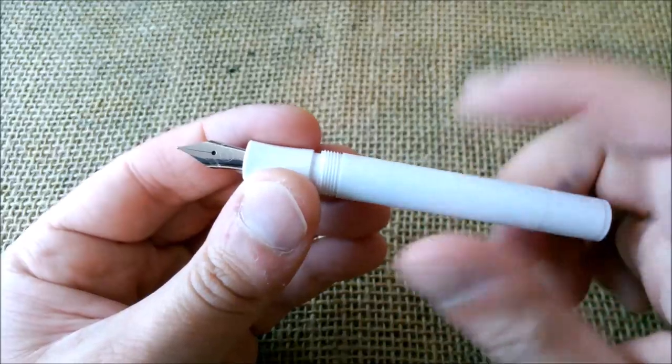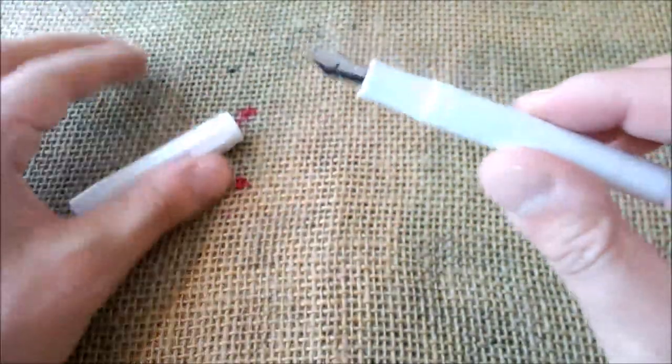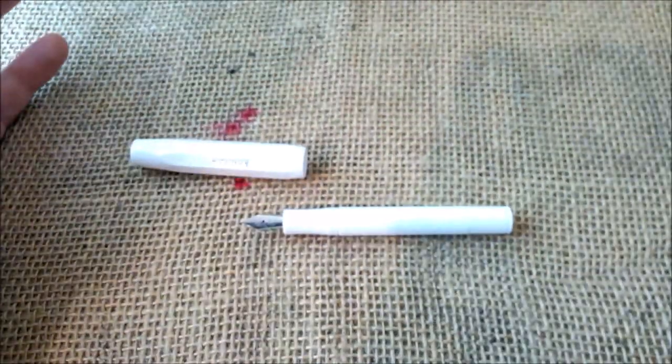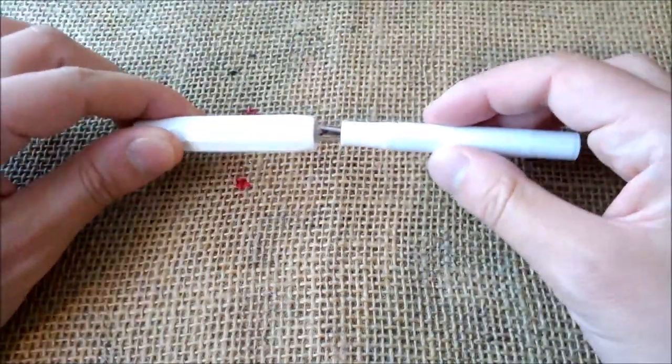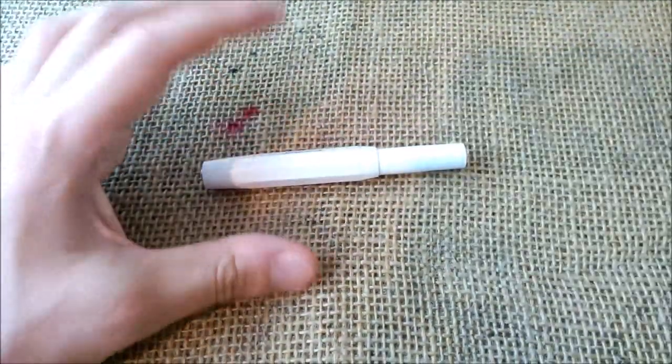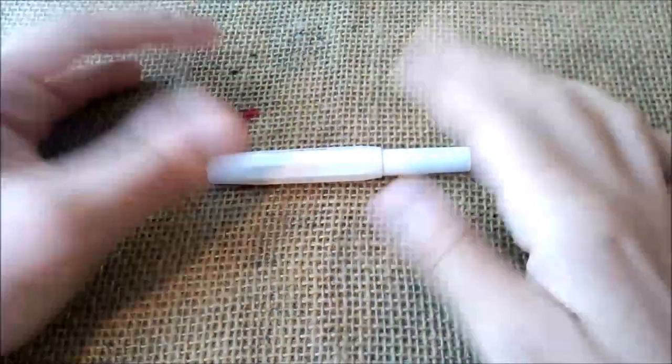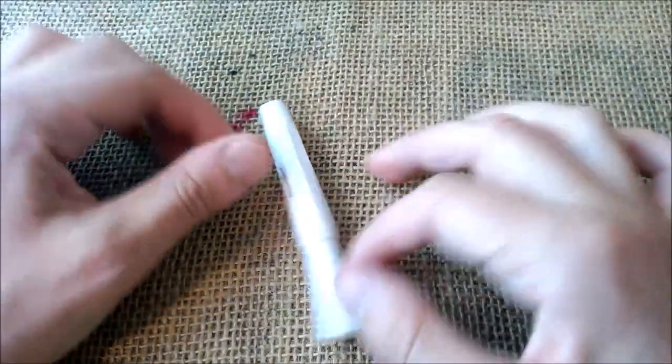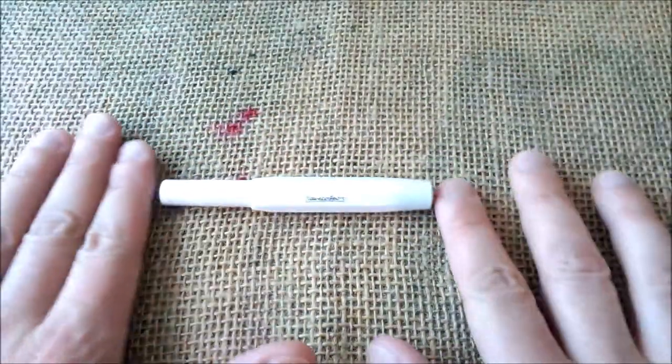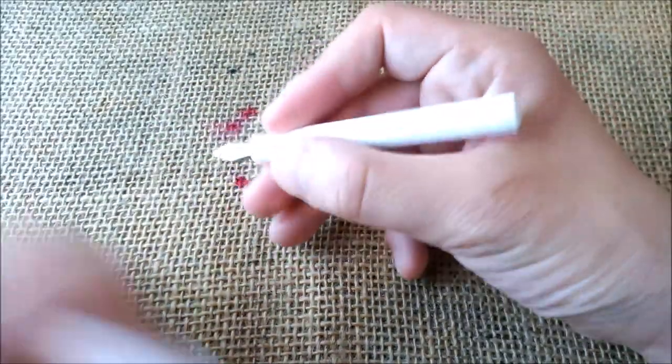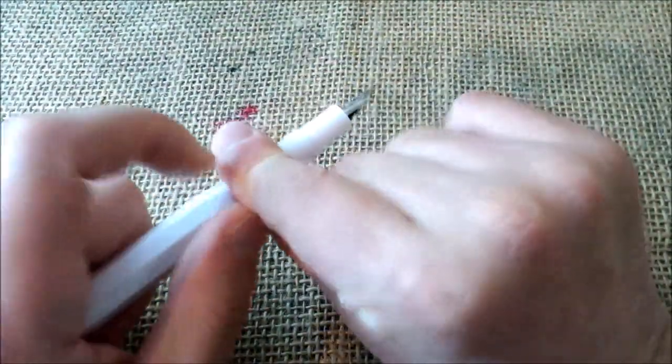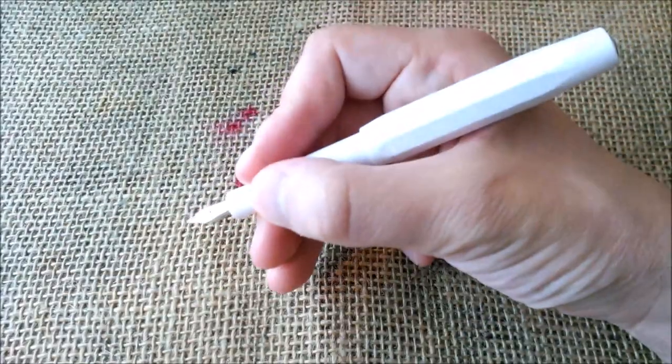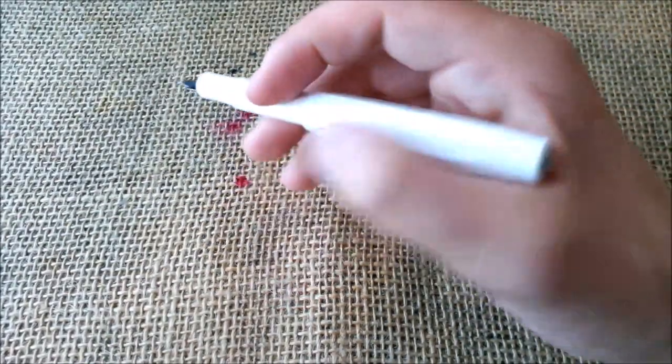This is a very small pocket pen made of ABS plastic. This one is white, you have them in lots of colors, some are regular edition, some are special editions. The pen is very short and it's not easy to write with when it is unposted, although I can use it. I don't have giant hands. If you have giant hands you can post the pen. It posts quite securely and deeply and you'll get a full-sized pen.